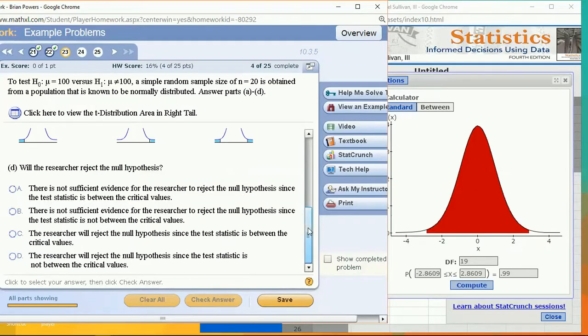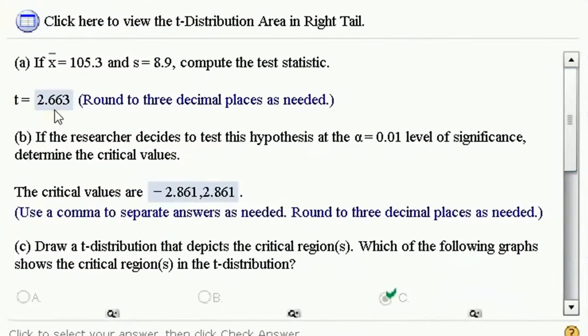So we want to compare now. My test statistic was 2.663. Would that be out in the tails? No, it would not.